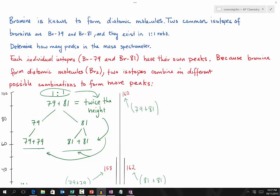Determine how many peaks in the mass spectrometer. Each individual isotope, bromine-79 and bromine-81, will have their own peaks, so we have two already.